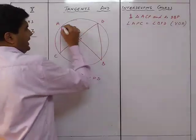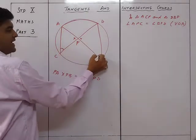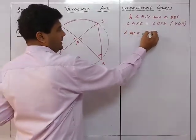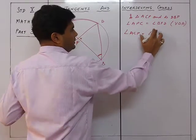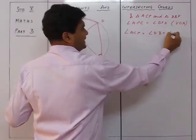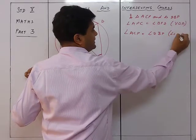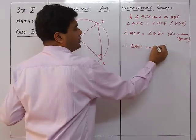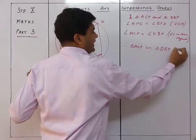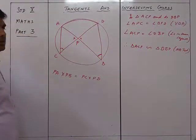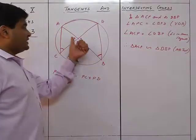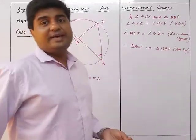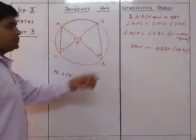We also know that arc AD subtends angle ACD and angle ABD, so these two angles are in the same segment. Therefore angle ACP = angle DBP (angles in same segment). Hence triangle ACP is similar to triangle DBP by AA test — we proved two pairs of angles equal, so similarity follows.